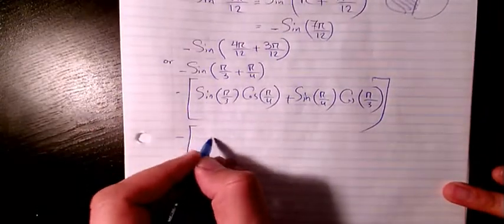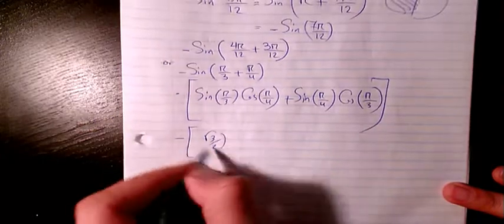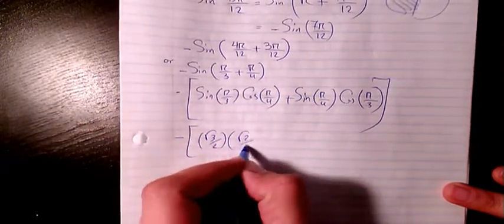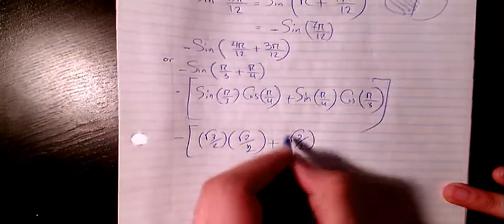It's going to be negative sine pi over 3 is root 3 divided by 2. Cosine pi over 4 is root 2 divided by 2. Sine pi over 4 is root 2 divided by 2. Sine pi over 3 is root 2.